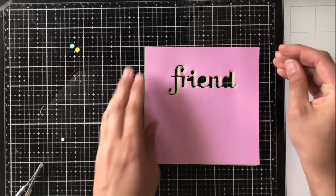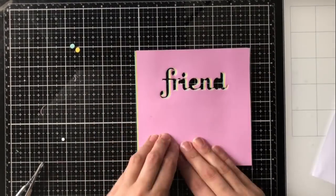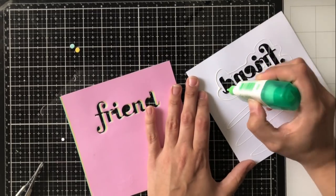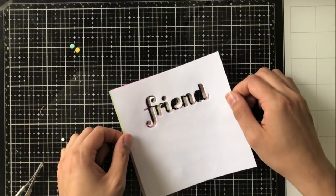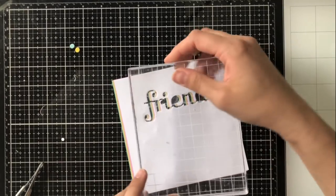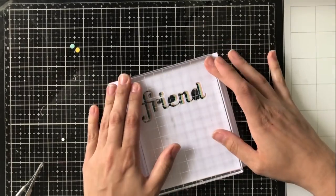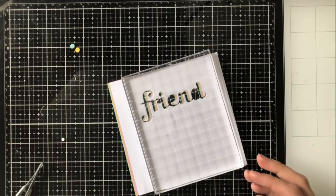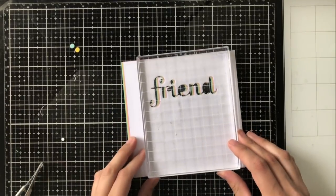So we get the opposite look with the negative die. So it's going to say friend, but obviously the word friend is going to be cut out, but you'll be able to see all of those colors of the cardstock as well. When I'm done gluing this all together, I'm going to set again, my very large acrylic block on it and put it to the side so that it dries nice and flat.